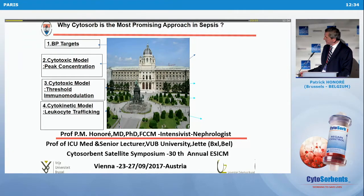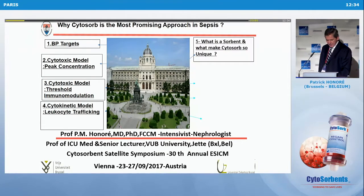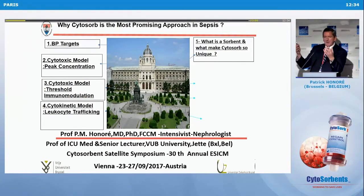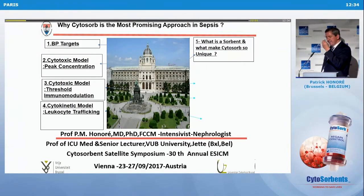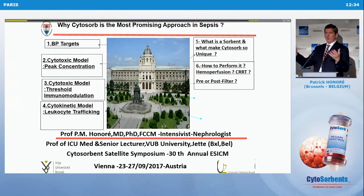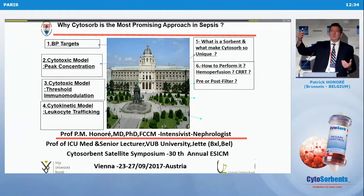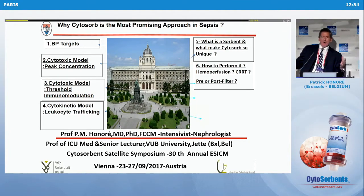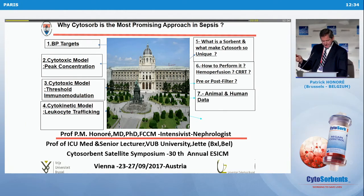I will describe what a sorbent is — is it like a classical membrane or not? Why does CytoSorb make it so unique? How to perform it — like a normal perfusion with CRT, pre, post? We'll look at animal and human data, and then some conclusions.